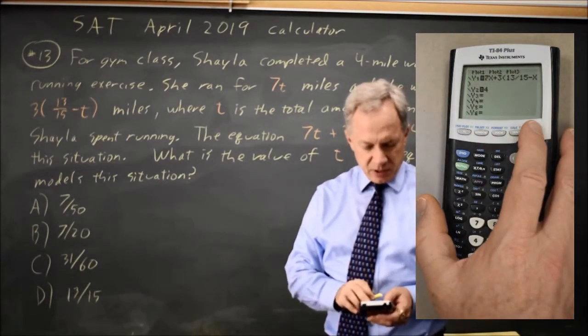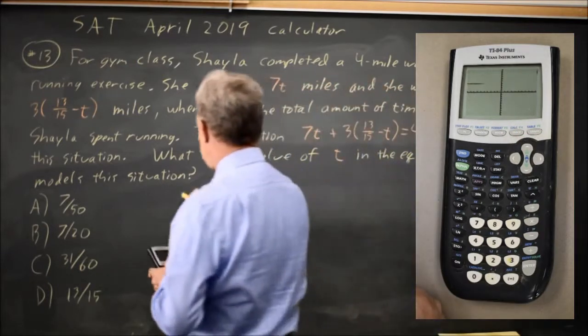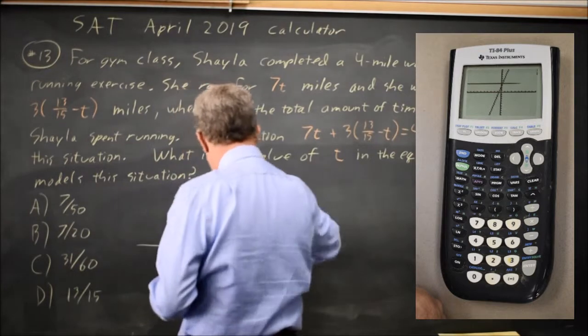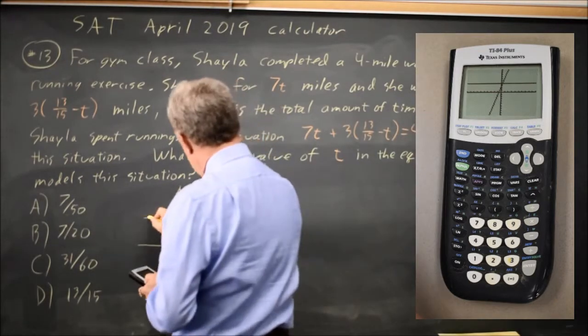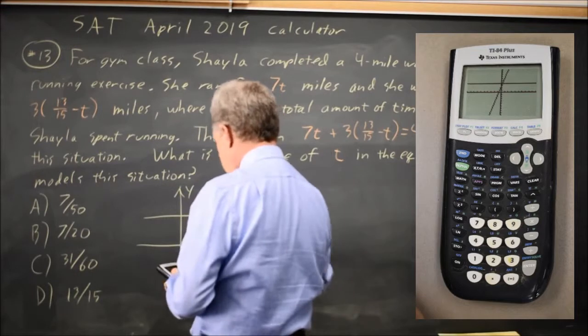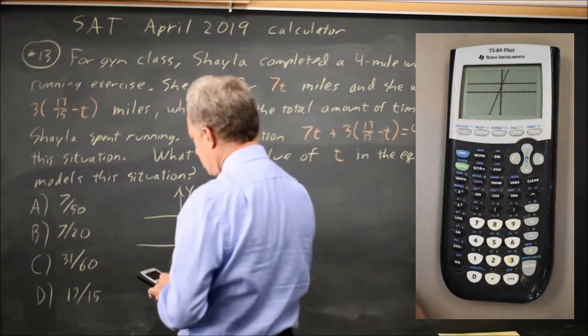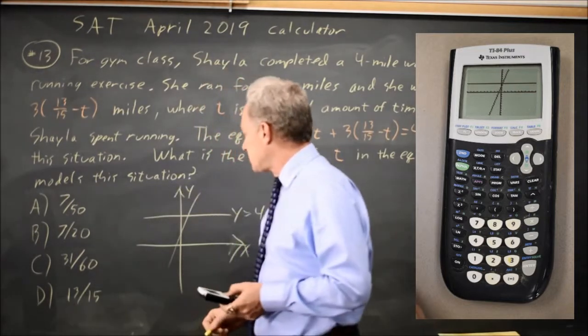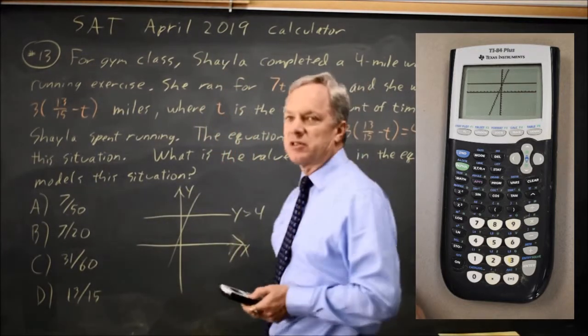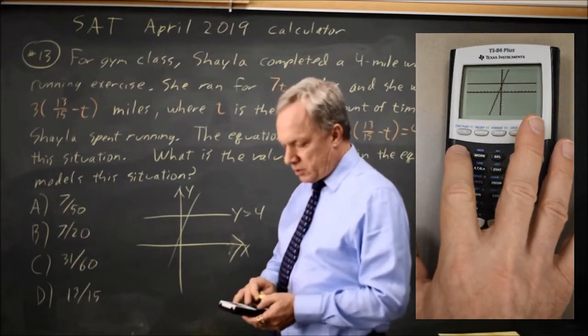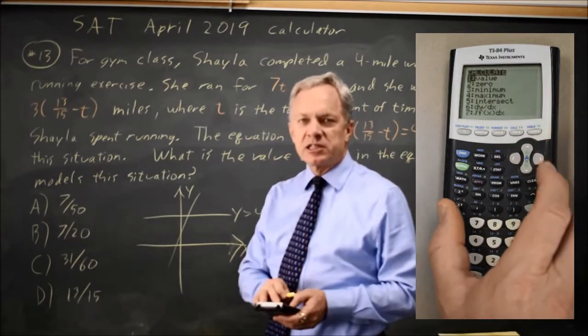And when I hit graph, my graph looks something like this. I have y equals 4, and then I have a line something like this for my left-hand side 7x plus 3 times 13 over 15 minus x, and if I find the point of intersection,